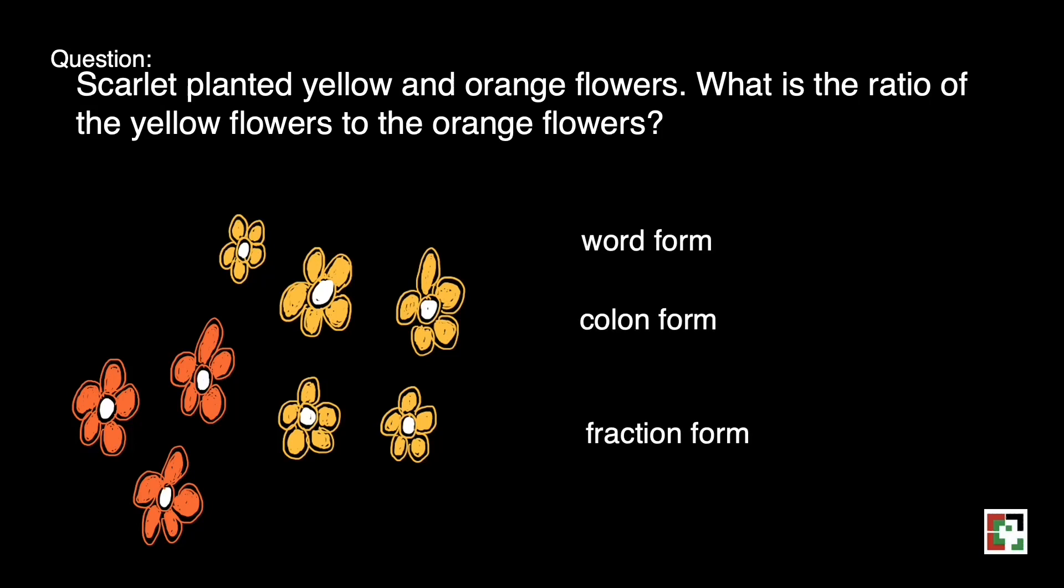The first one is in word form, colon form, and fraction form. In writing ratio, we have to take note what thing was being mentioned first. Because whatever is being mentioned first, that should be the one that we have to write first. For this case, we mentioned first the yellow flowers, then the orange.